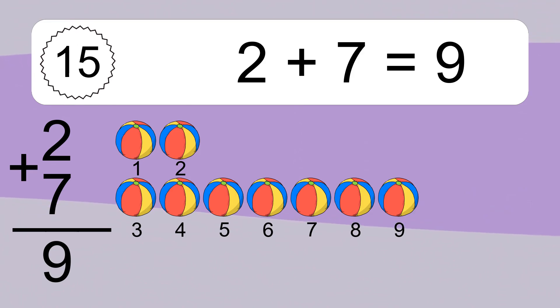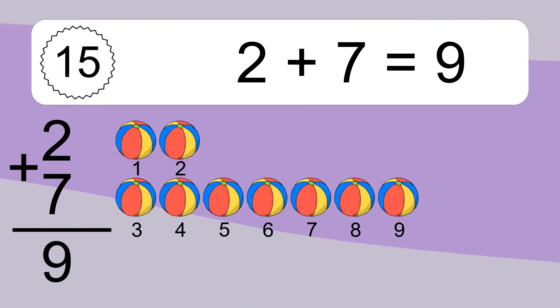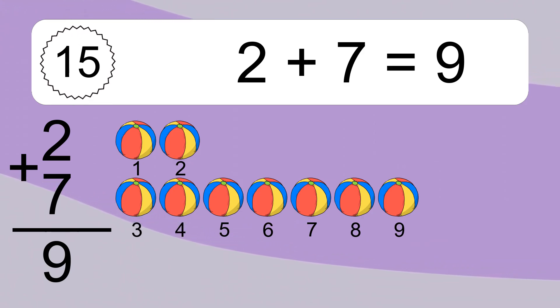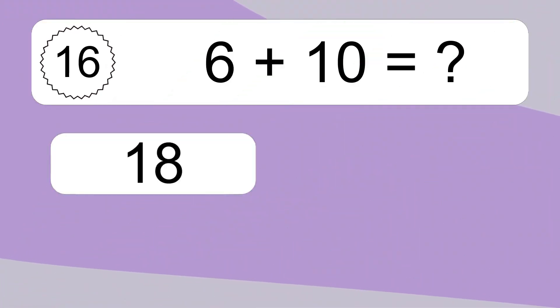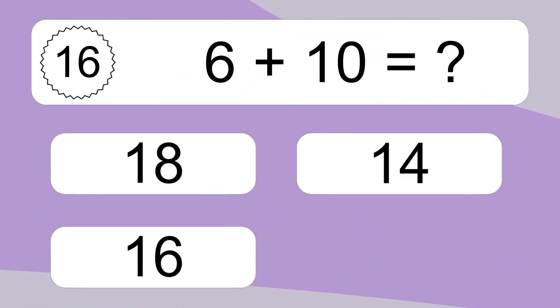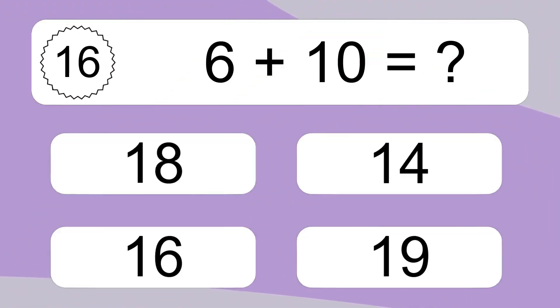2 plus 7 equals 9. Let's count it: 1, 2, 3, 4, 5, 6, 7, 8, 9.